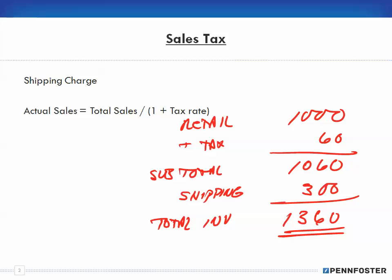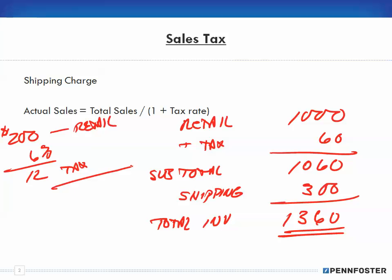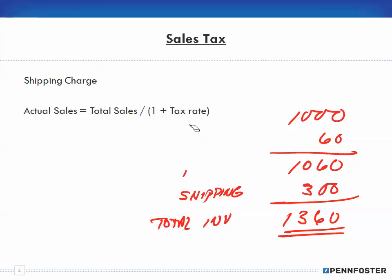One important thing: let's say you bought items for $1,000 and you have to return $200 of it. When you get a credit back, you're going to get a credit for the retail amount plus the tax — 6% of $200 is $12. So you'll get $12 back for tax and $200 for retail, but you don't get anything back for shipping. As far as a credit memo is concerned, you're not going to get back your shipping unless it's prorated. The important thing is that shipping is not taxable.